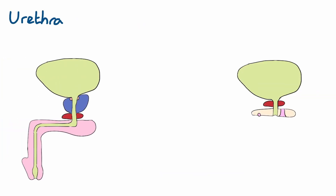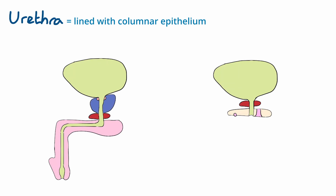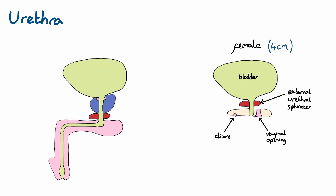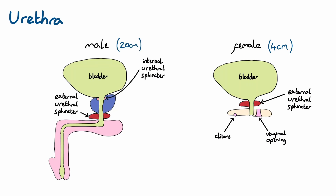The urethra is the anatomical tube connecting the internal urethral orifice to the external environment, allowing expulsion of urine from the body. It is lined with columnar epithelium, which allows for mucus production to protect itself from urine damage. The female urethra is around 4cm in length, passing from the bladder neck through the pelvic floor and opening in the vestibule of the perineum. The male urethra is around 20cm in length and is subdivided into three parts: the prostatic urethra, the most proximal part descending through the prostate where it also receives contents from the ejaculatory ducts; the short membranous urethra, passing through the pelvic floor and surrounded by the external urethral sphincter; and the bulbous urethra, passing through the penis and opening at a dilation called the navicular fossa.